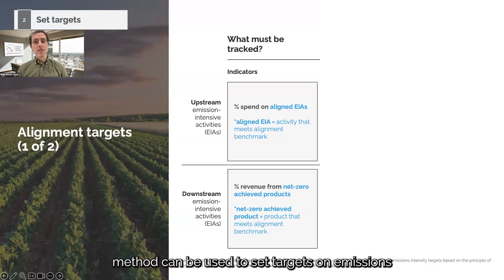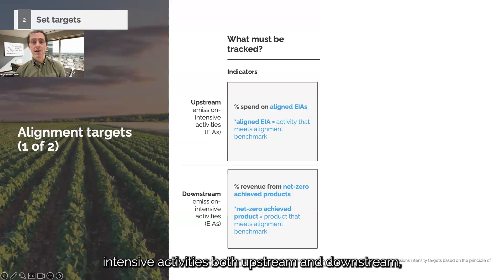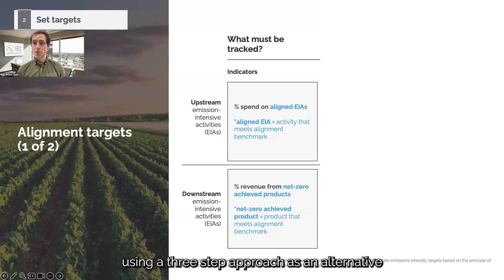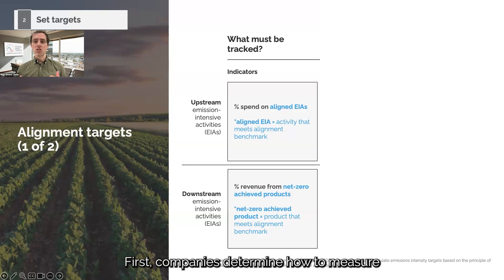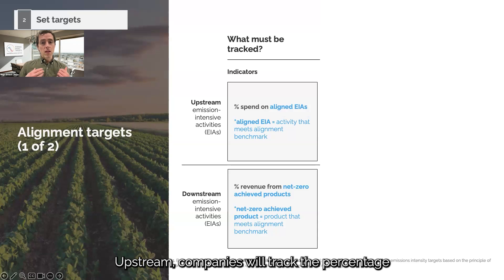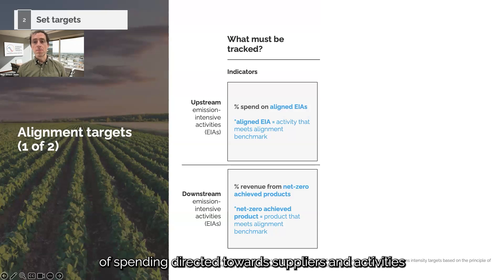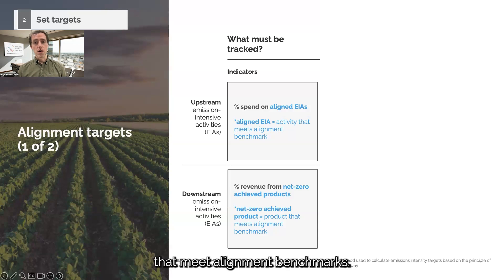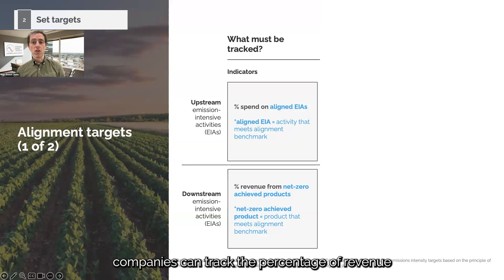Next, the alignment method can be used to set targets on emissions intensive activities both upstream and downstream, using a three-step approach as an alternative to absolute and intensity reduction methods. First, companies determine how to measure alignment based on their position in the value chain. Upstream companies will track the percentage of spending directed towards suppliers and activities that meet alignment benchmarks. For downstream emission sources, companies can track the percentage of revenue generated from products that meet alignment benchmarks.